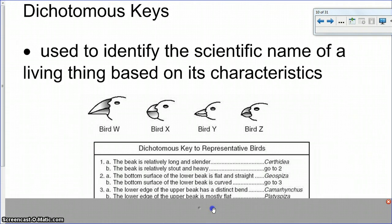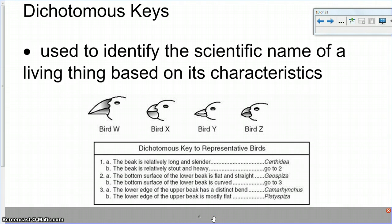So for example, if we were looking at these birds here and you were trying to classify what their names were. So obviously they have some different characteristics with regards to their beaks. So say we were looking at bird W, we would use this dichotomous key to figure out what the bird's genus name is. So you start with number one. You say, well, the beak is either relatively long and slender or the beak is relatively stout and heavy. So you have to decide which of the two probably applies and look at the rest of them and see what they look like. This one here looks to be long and slender. The other one seemed to be short and heavy, stout and heavy. So I would say that bird W has a beak that's stout and heavy. So if it does, that means you go to question two.